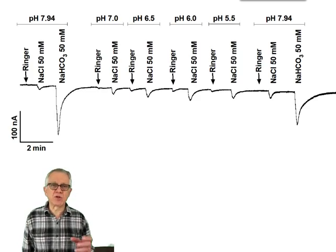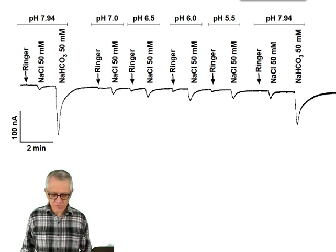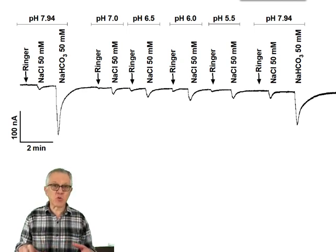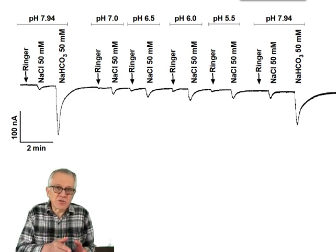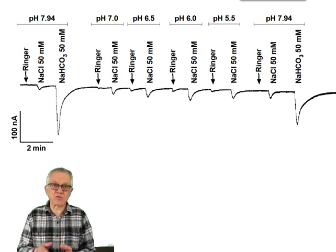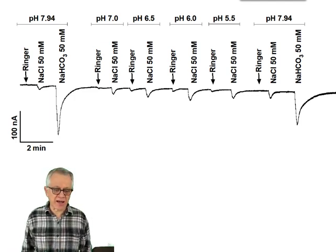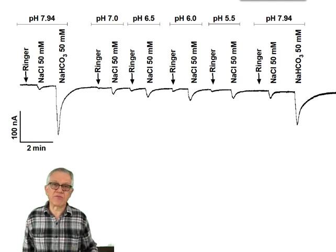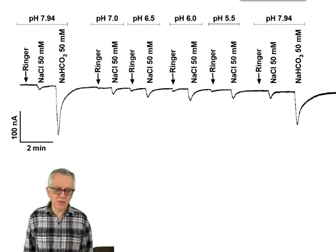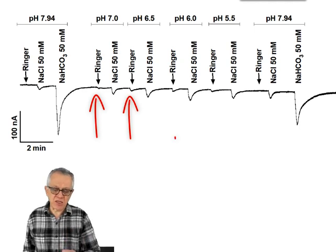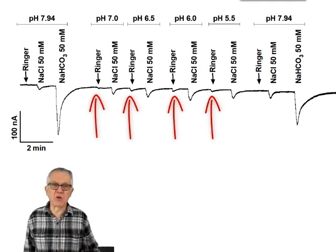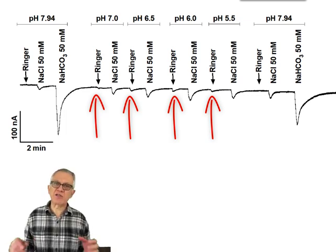We then addressed the first question: whether protons — pH — would drive the receptor response, as Carlson asked in 2007. For each preparation, we first test the oocyte and test it again at the end to make sure it remained alive throughout. We tried Ringer solution, sodium chloride, and sodium bicarbonate both at 50 millimolar. We then changed the pH of the Ringer to pH 7, 6.5, 6, and 5.5. Basically there is no response to these pH changes. So it's not pH itself that causes the receptor to fire — the receptor responds to something else.